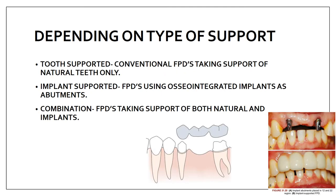The next is depending on the type of support — whether it is tooth-supported, implant-supported, or a combination of both. Tooth-supported is the conventional FPD taking support from natural teeth as abutments. Implant-supported FPDs use osseointegrated implants as the abutment. Combination FPDs take support from both natural teeth and implants. So this was all about the various classifications of fixed partial dentures. Thank you so much.